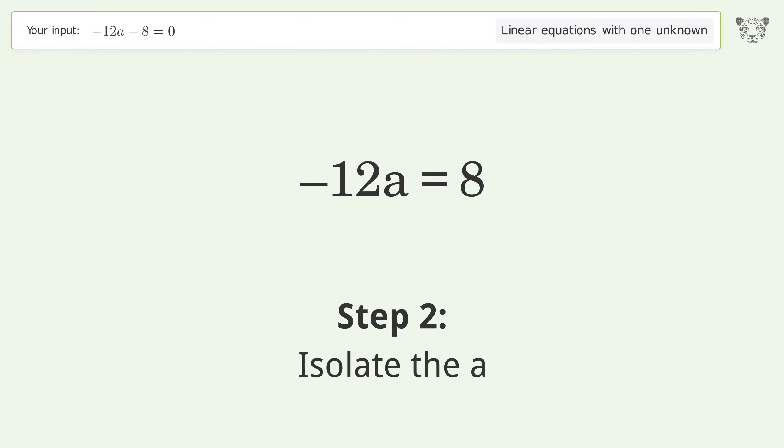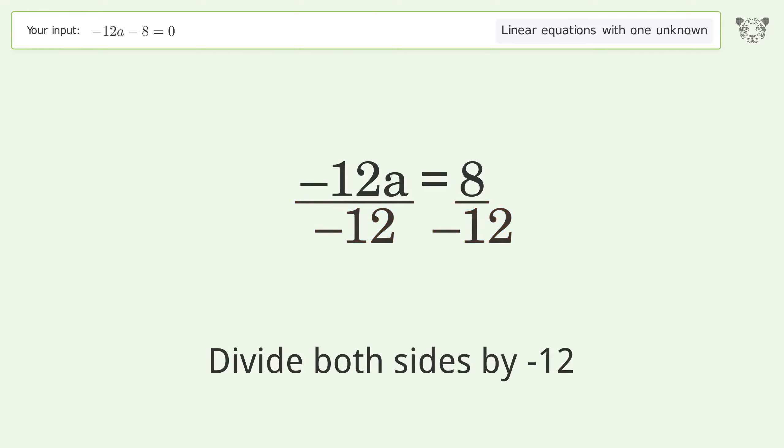Isolate the a. Divide both sides by negative 12. Cancel out the negatives.